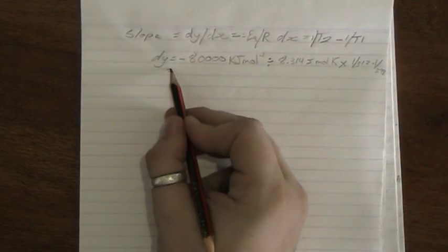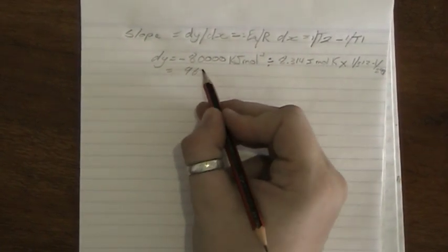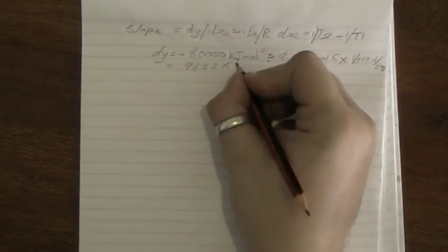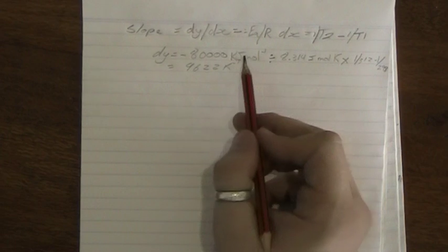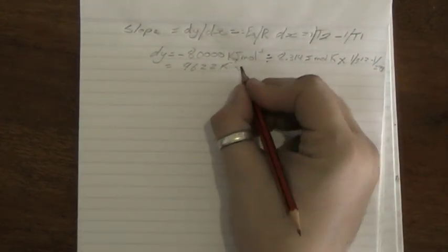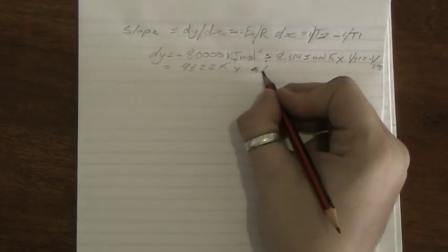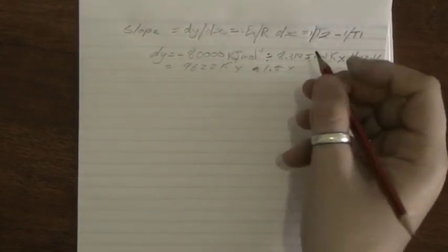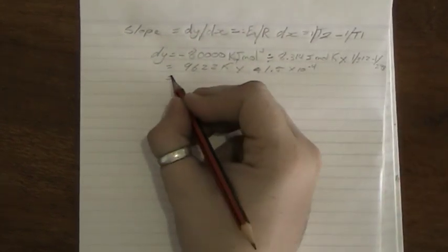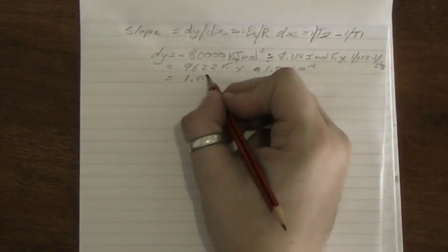dy equals 9622 kelvin minus 1. These two joules per mole cancel each other out, times 1.5 times 10 to the negative 4, which equals 1.4433.